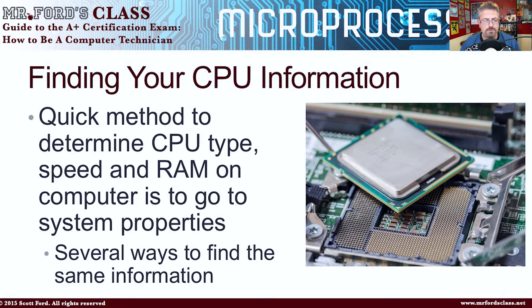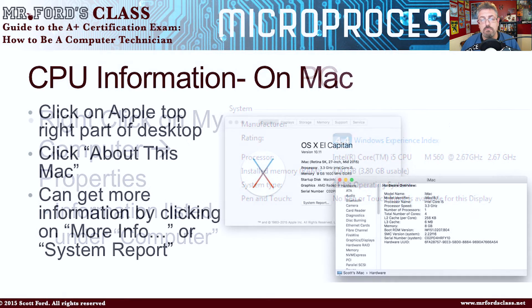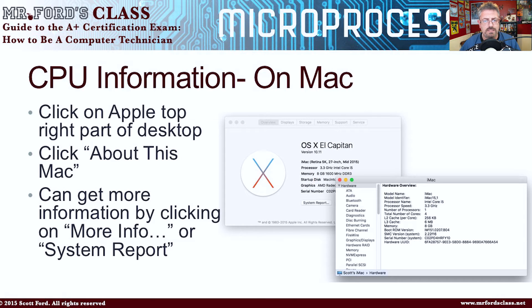What kind of CPU do you have on your computer? There is a really easy way to find out. If you have a PC, you want to find your My Computer icon on your desktop, right-click on it, and then go to Properties — the information will be listed there. If you have a Mac, click on the Apple in the top-left portion of the desktop, click on About This Mac, and then you can get more information by clicking on More Info or the System Report.